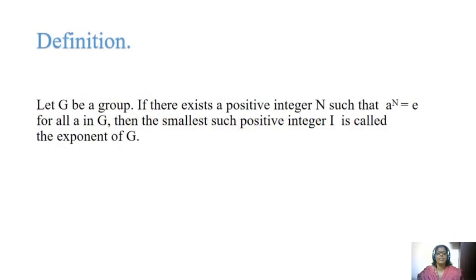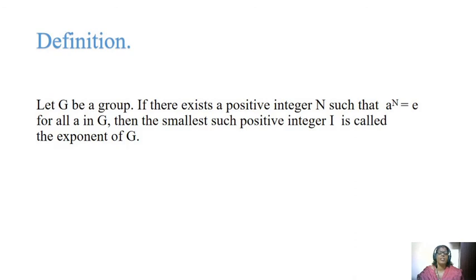Next definition is the exponent. Let G be a group. If there exists a positive integer N such that A^N equals E for every element A in G — that is, some power makes every element into the identity — then the smallest such positive integer N is called the exponent of G.